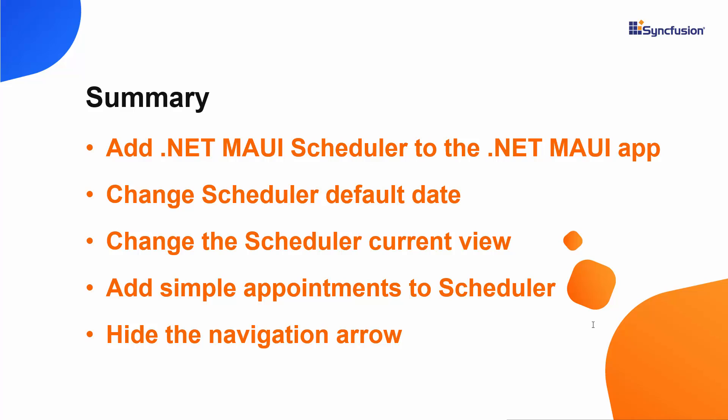In this video, we have seen how to create a .NET MAUI app using Visual Studio 2022 and add a Syncfusion .NET MAUI scheduler control to it. We learned how to add simple appointments, change the default date, view, today's date highlight color, and how to display week numbers. If you'd like a working example, download it from the GitHub link in the description. A link to check if you qualify for the community license — which gives a free license key for the entire .NET MAUI control suite — is also included. If you found this video useful, don't forget to like and subscribe. Thanks for watching.